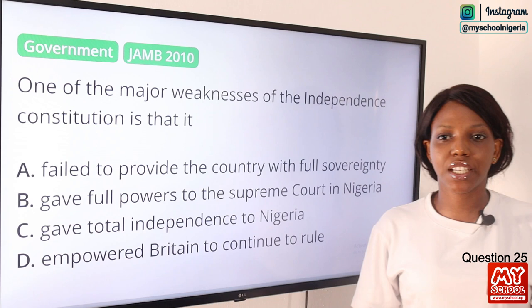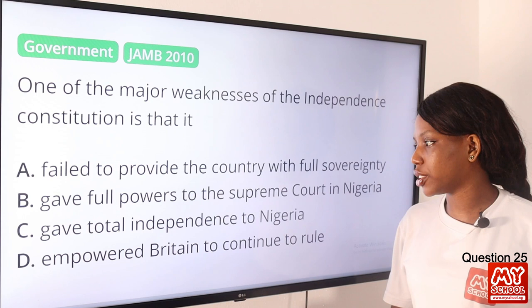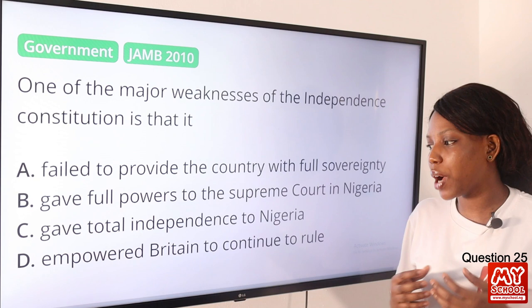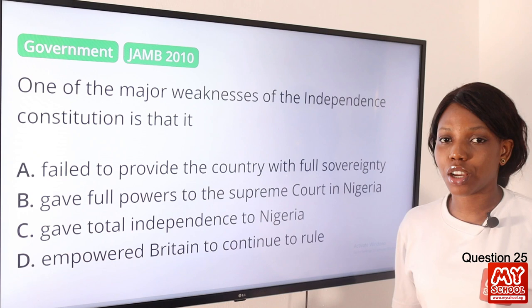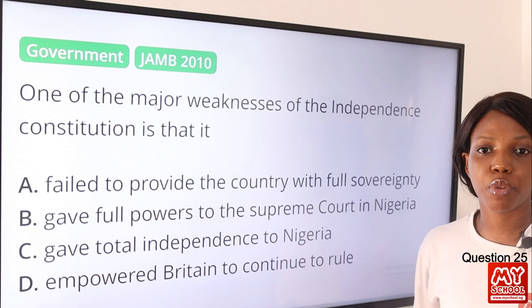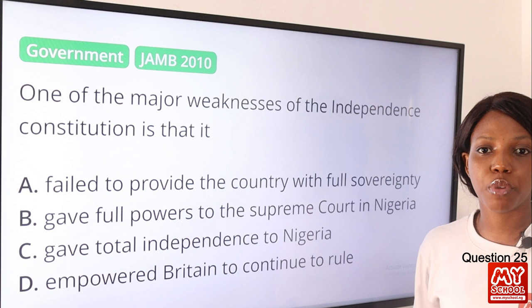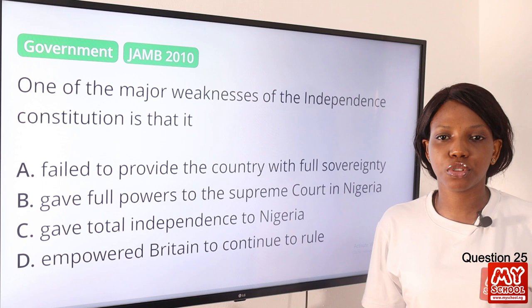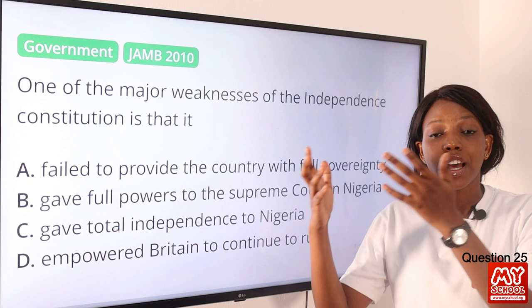Question 25. One of the major weaknesses of the independence constitution is that it: A, failed to provide the country with full sovereignty; B, gave full powers to the Supreme Court in Nigeria; C, gave total independence to Nigeria; D, empowered Britain to continue to rule. The answer is option A. The independence constitution of 1960, under Prime Minister Abubakar Tafawa Balewa, still had the Queen of England as head of state, meaning it did not give full sovereignty to Nigeria.